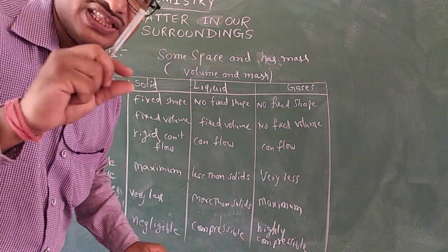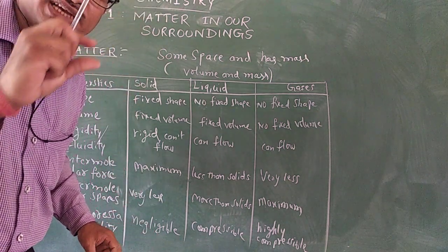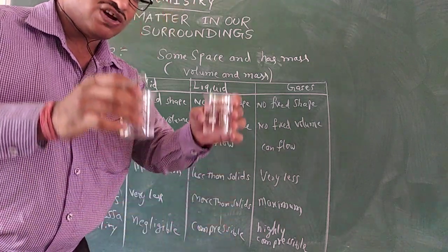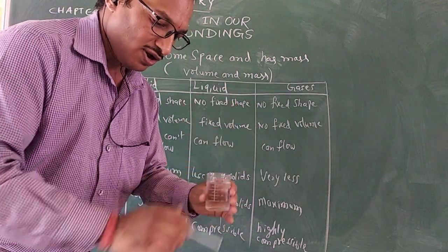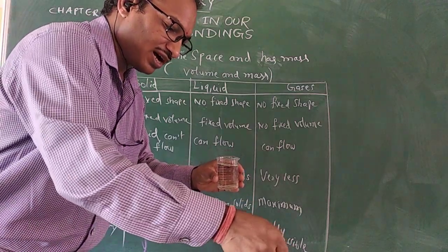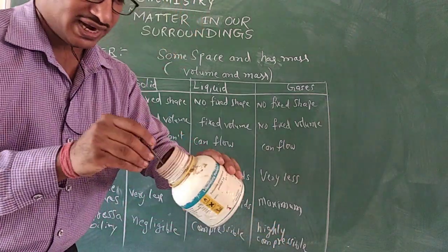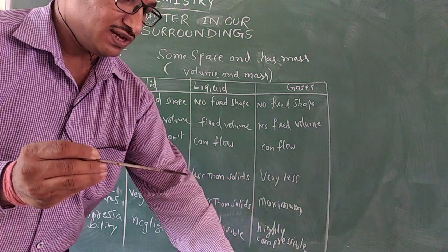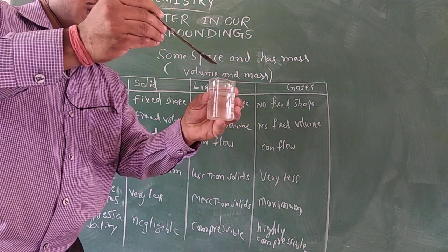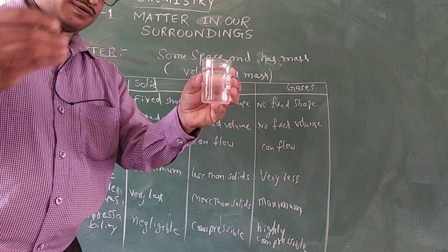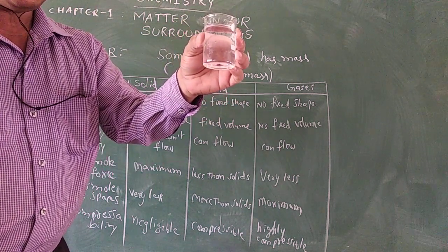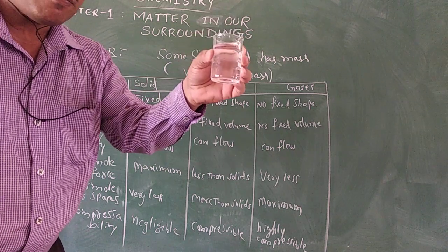To understand that spaces are present between particles of matter, we can do some activities. I am going to add potassium permanganate — potassium permanganate is a solid — into water. Just observe what is going to happen. With this activity, we can also understand the concept of diffusion.